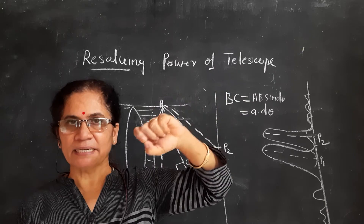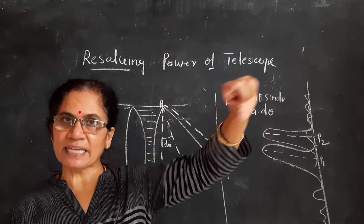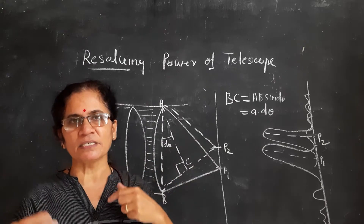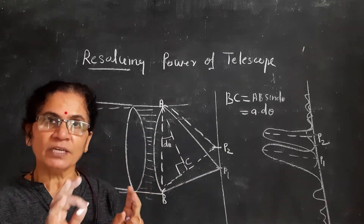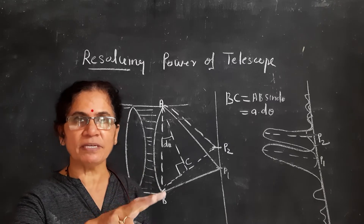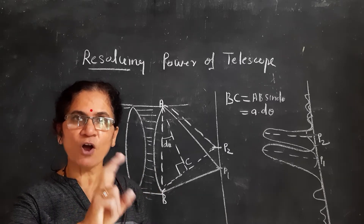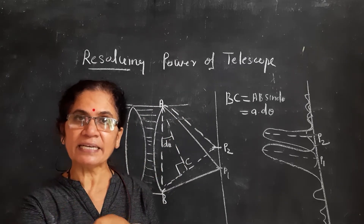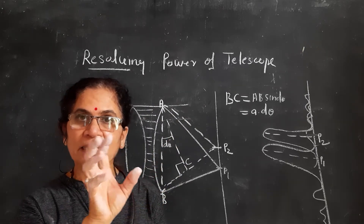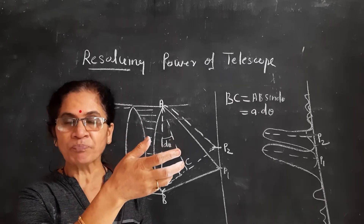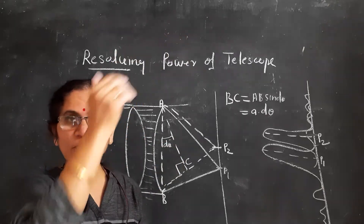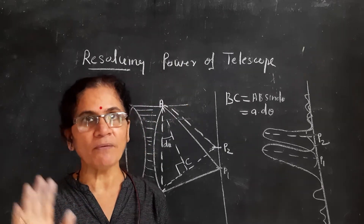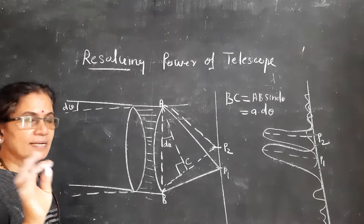You cannot separate the two close objects with the naked eye. But when you observe through the telescope, you will get two separate images of those two objects which are very close together — whereas with the naked eye you cannot separate them. The telescope has the ability to resolve the images of the two point objects which are at a far distance. That is its resolving power. Let's understand how.